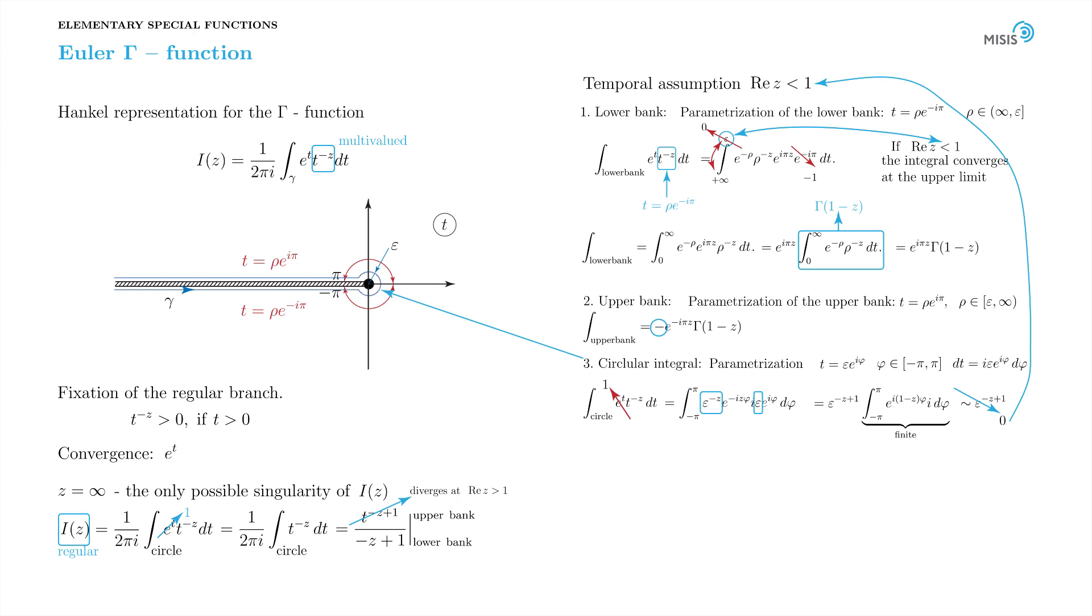So when the condition real part of z is smaller than 1 holds, the integral along the small circle can be discarded. And now we are left with just the two gamma functions.